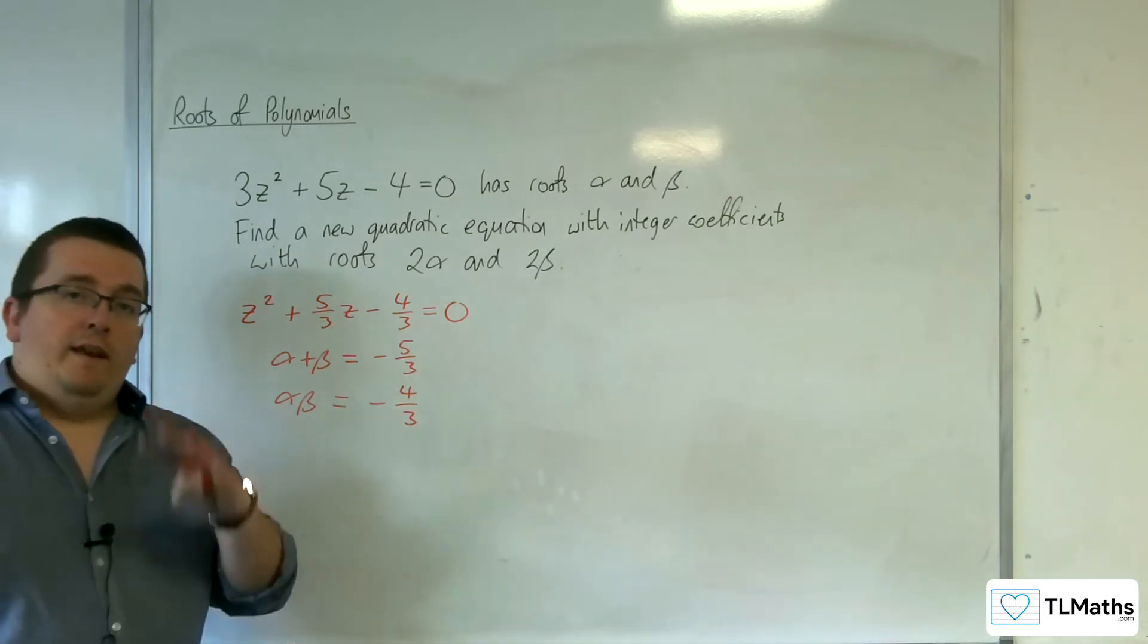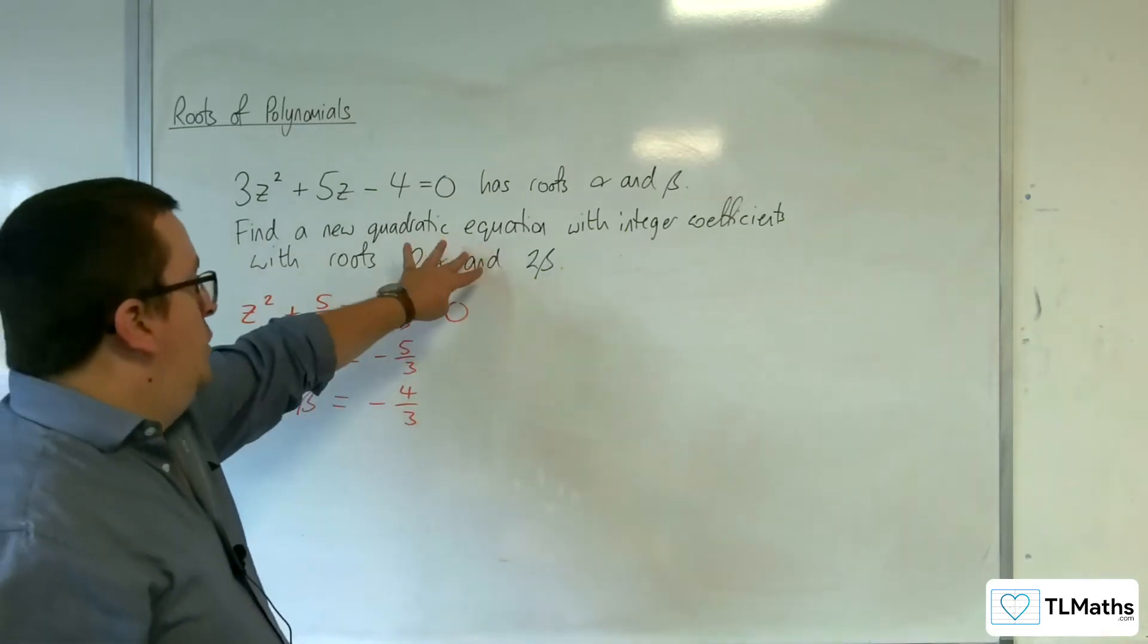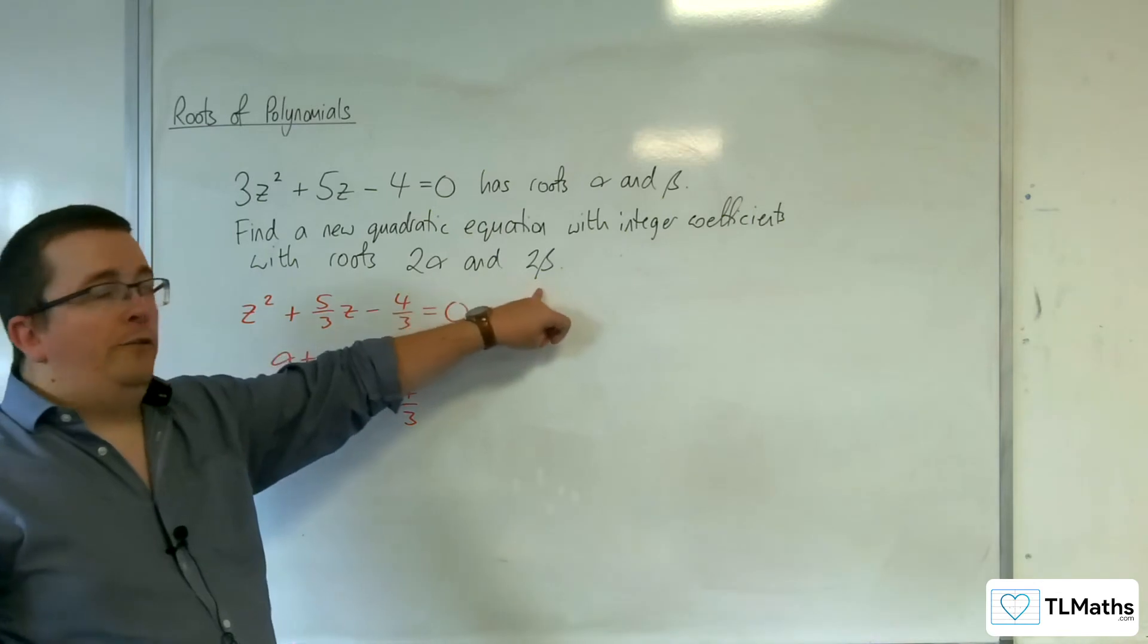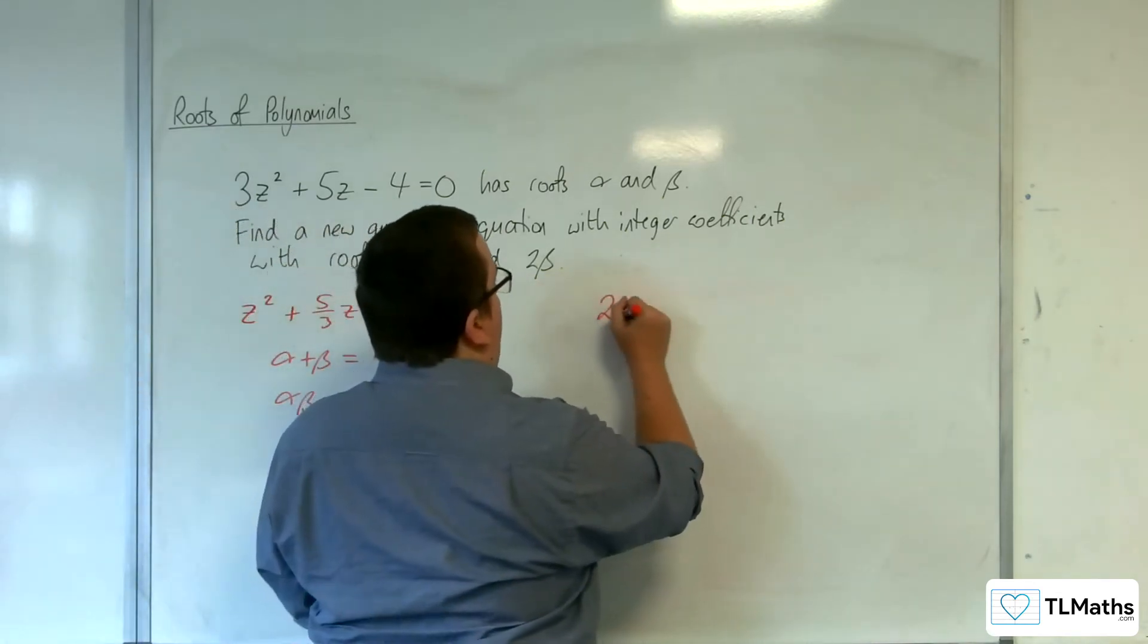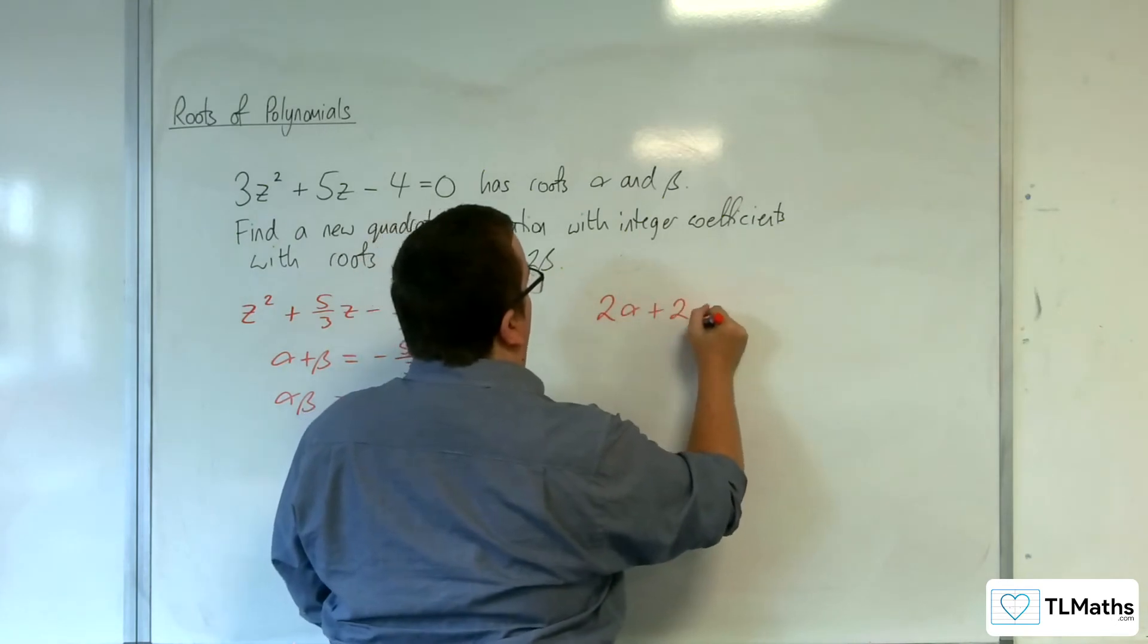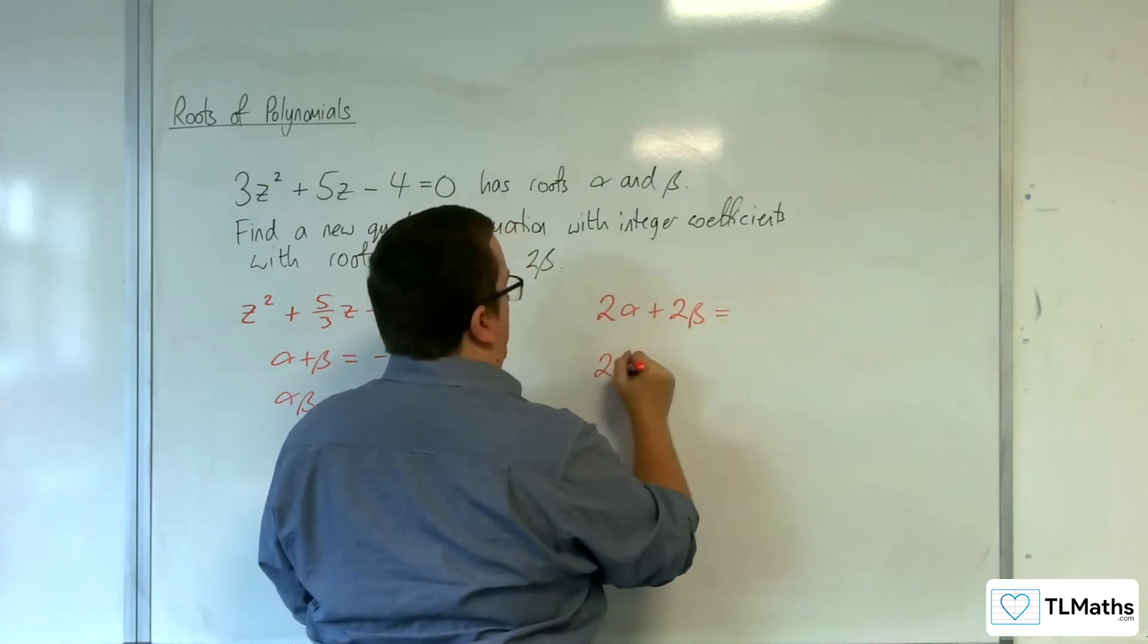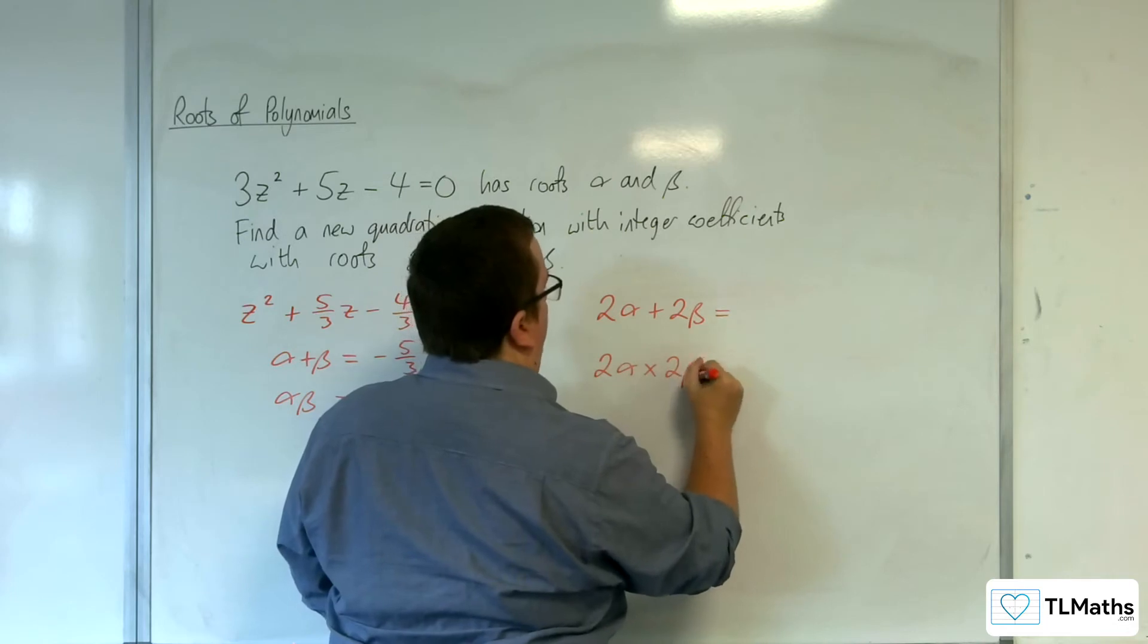Now, my new equation has to have roots 2α and 2β. Now for that, I then need to find the sum and product of those two roots.